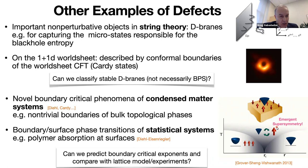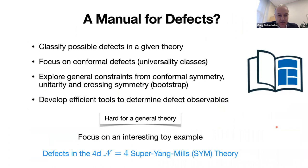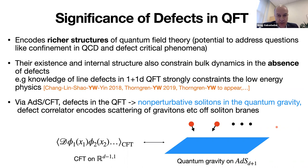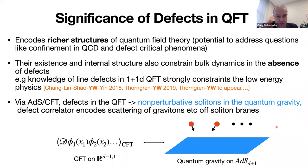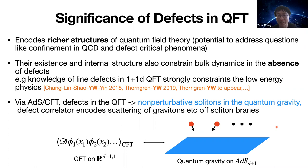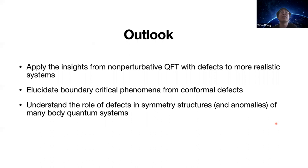A discussion arises about type IIA with a D4-brane wrapped on S1 with Scherk-Schwarz boundary conditions, which would be close to non-conformal — related to Witten's model — as a step towards understanding defects in non-conformal, non-supersymmetric gauge theories closer to QCD. This is still large N but non-conformal, and represents an interesting baby step in that direction.